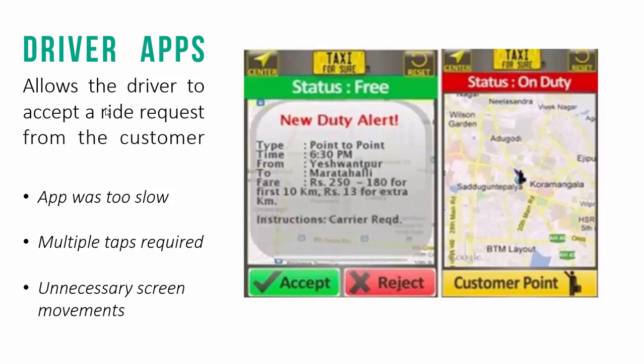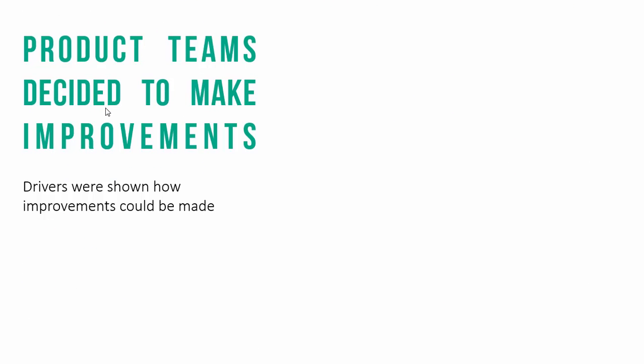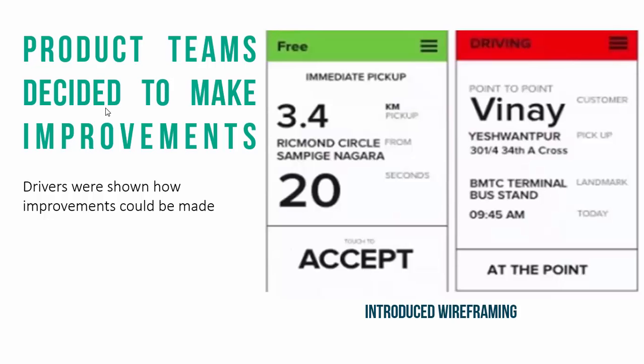So what did the product team really do? They decided to do the obvious — make improvements and fix the bugs. But did they just jump in and fix it? No. They decided to first show the driver what kind of improvements could be done on the app. They introduced the concept of wireframing — a simple mock-up shown to the driver. The mock-ups met with a lot of success, and the changes were then implemented and rolled out to great success.